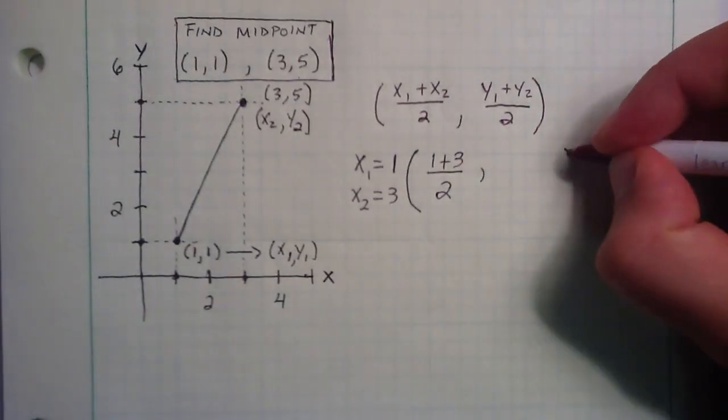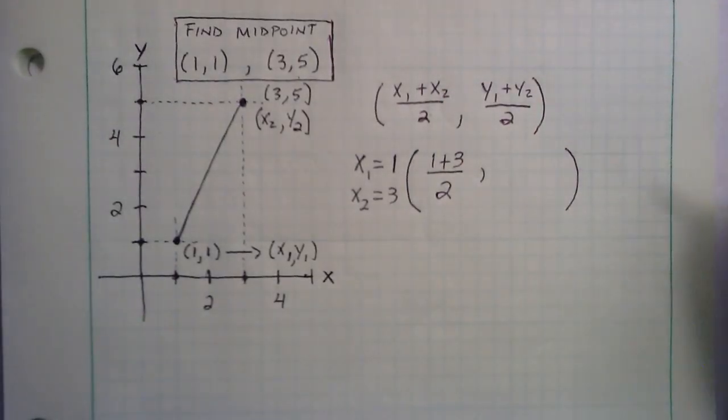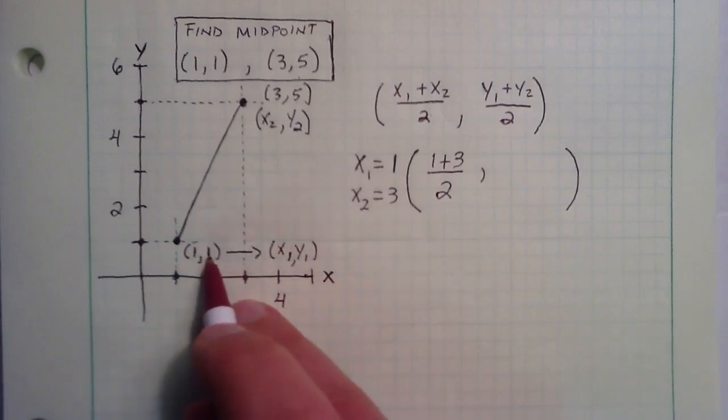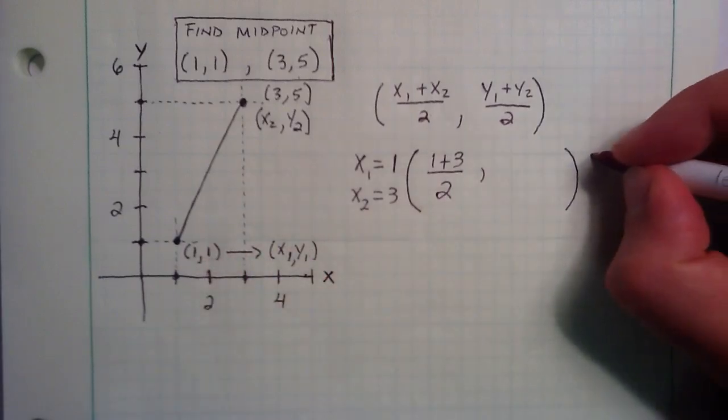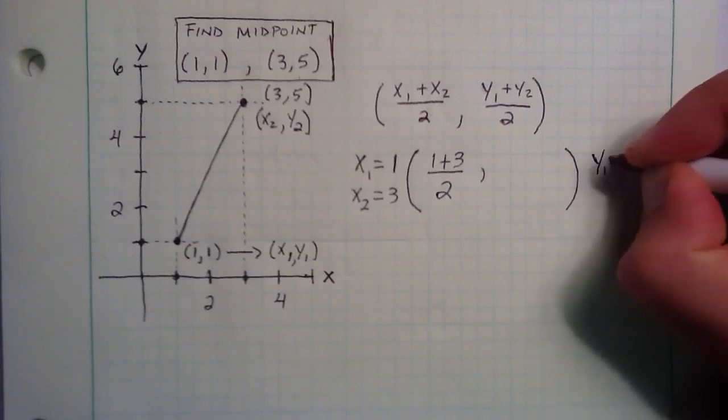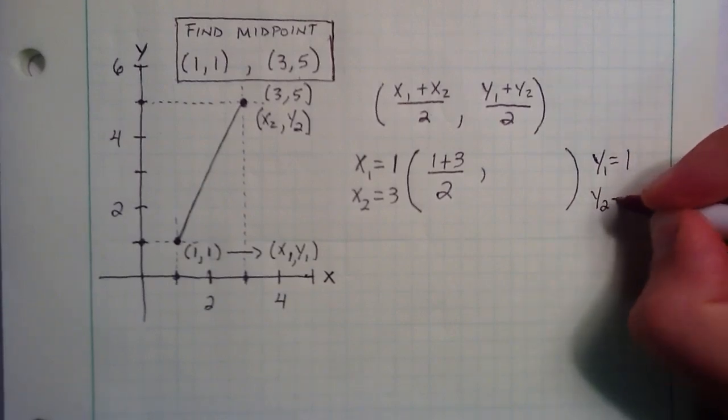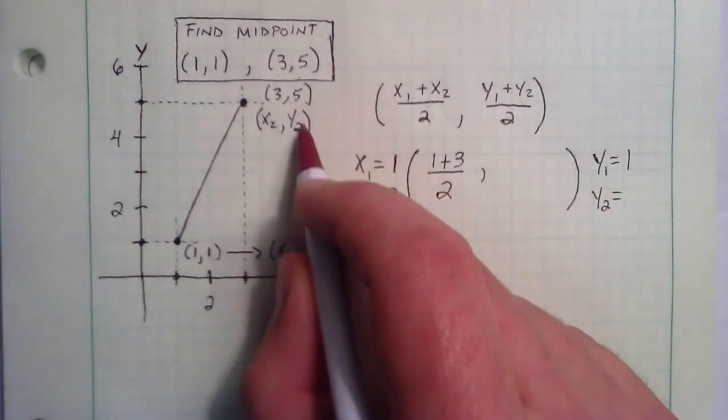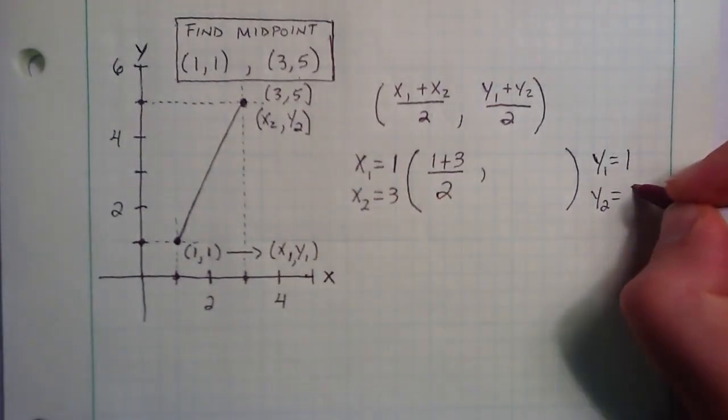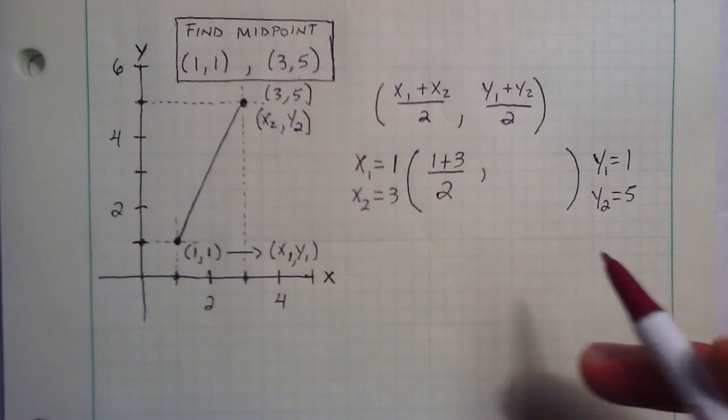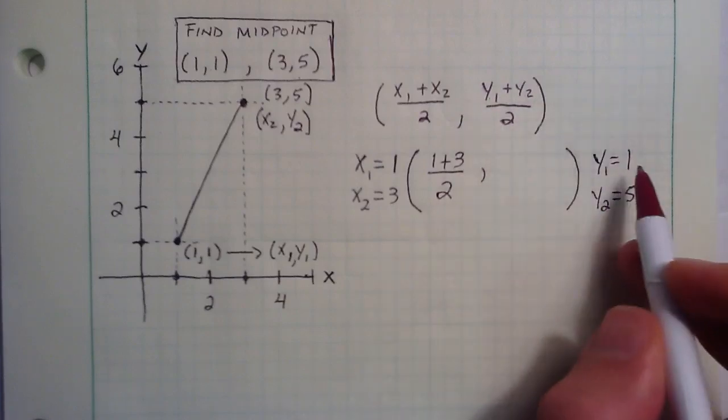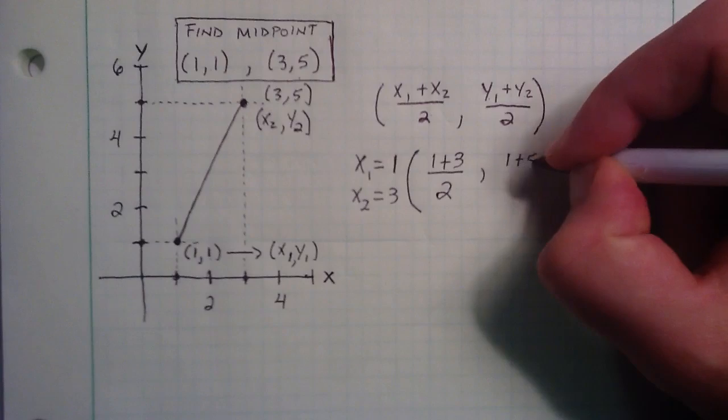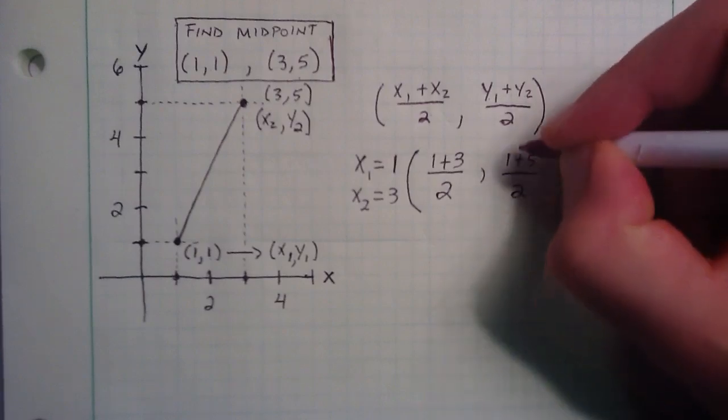And so now we want to find our y1 and our y2. y1 refers to the right-hand side, or the y component of this point, which is a 1. And y2 refers to the y component of this point, so that's a 5. So then really, y1 + y2 is simply 1 + 5, and then that's divided by our 2.